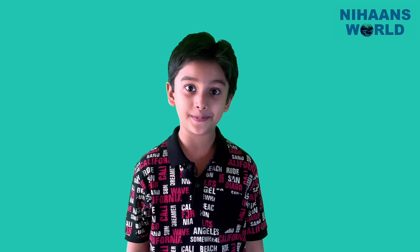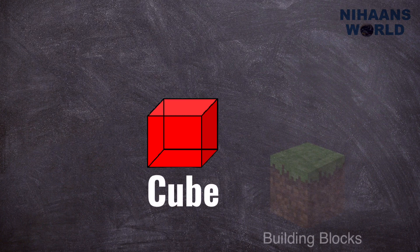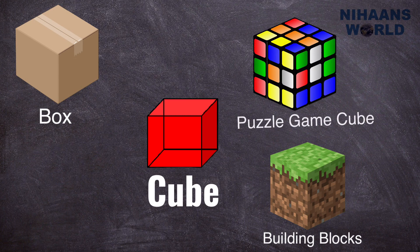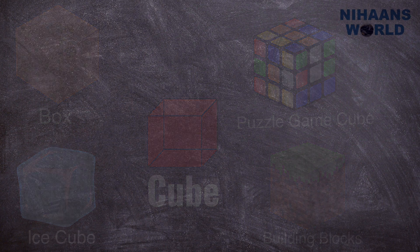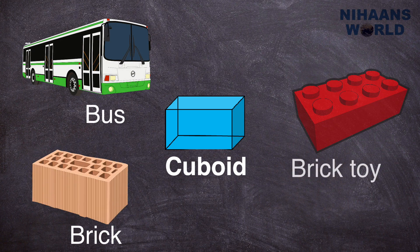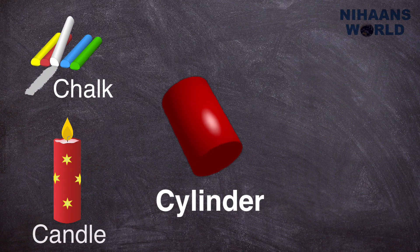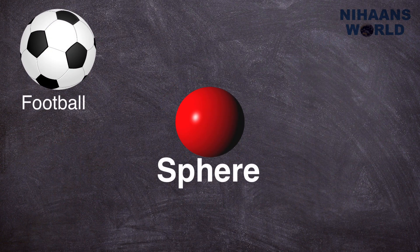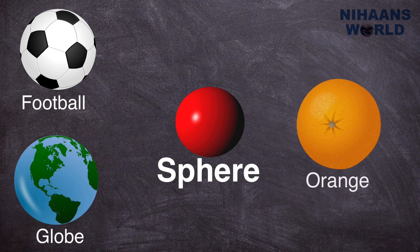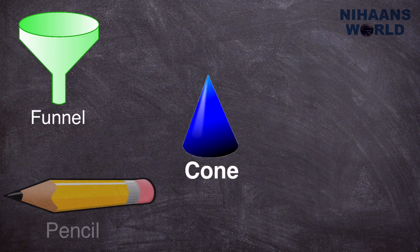Let's see 3D shapes in your world examples. Cube: building blocks, box, puzzle game cube, ice cube. Cuboid: bus, brick, brick toy. Cylinder: chalk, candle, glass. Sphere: football, globe, orange. Cone: funnel, pencil, top.